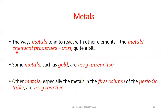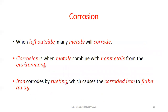The chemical properties of metals vary quite a bit. Some metals such as gold are very unreactive. Other metals, especially those in the first column of the periodic table like sodium and potassium, are very reactive. When left outside, many metals will corrode. Corrosion is when metals combine with non-metals from the environment. Iron, for example, reacts very quickly with the atmosphere and rusts very quickly. Iron corrodes by rusting, which causes the corroded iron to flake away.